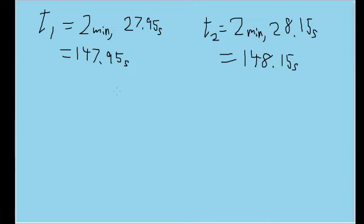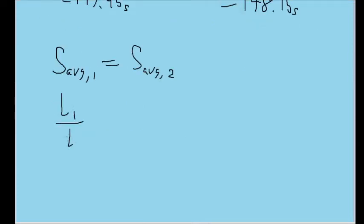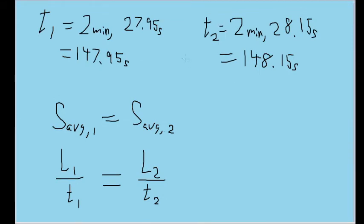In the case where the difference in track length is at its maximum, both runners' average speeds should be identical. So let's set S-sub-average-1, the average speed of runner 1, equal to S-sub-average-2, the average speed of runner 2. This means that L₁ divided by T₁, the average speed of runner 1 rewritten in terms of length and time variables, will be equal to L₂ divided by T₂, the length and time of the race that runner 2 had to run through.